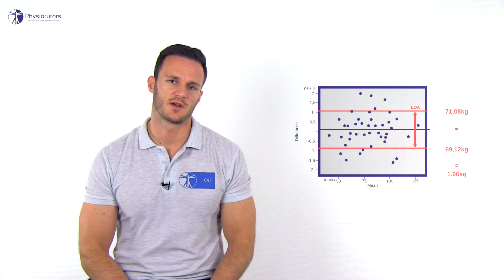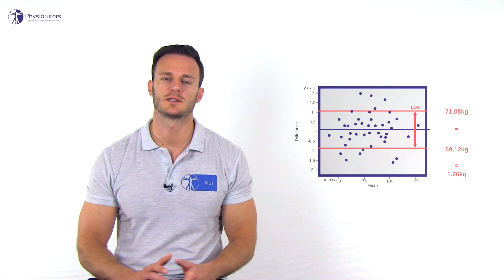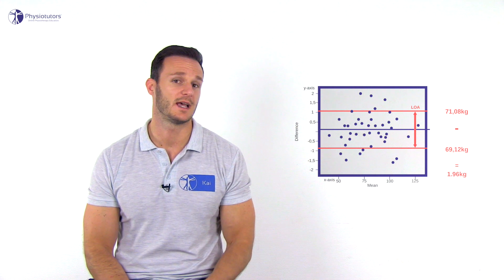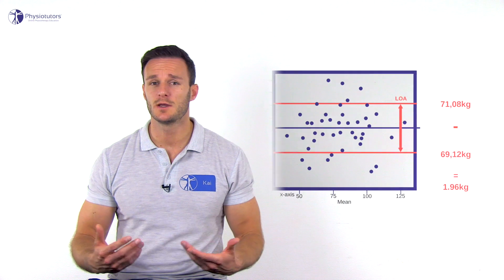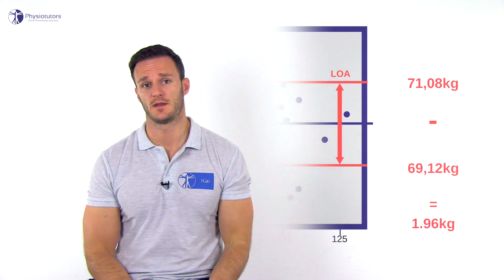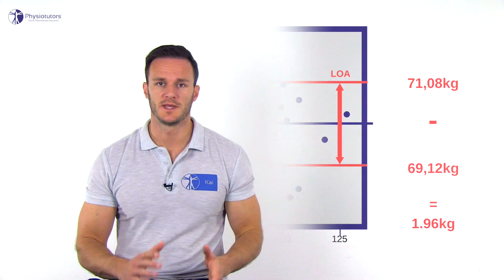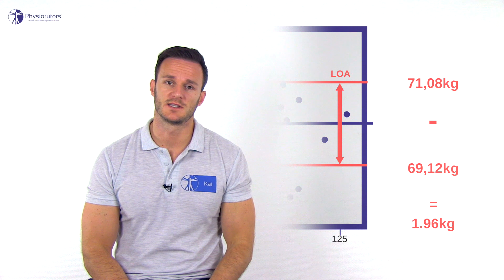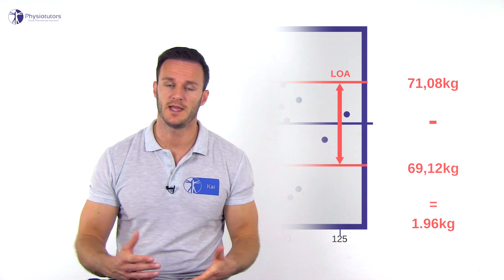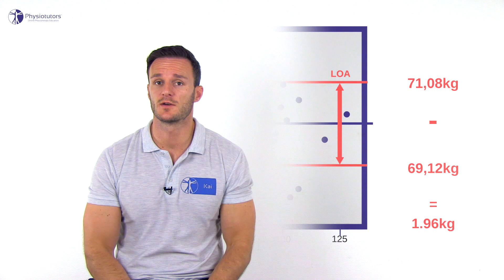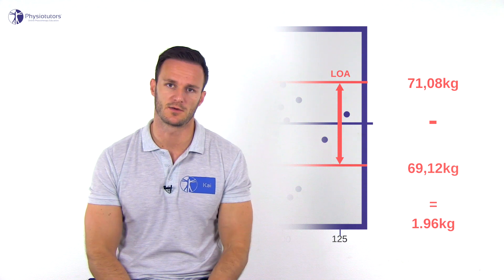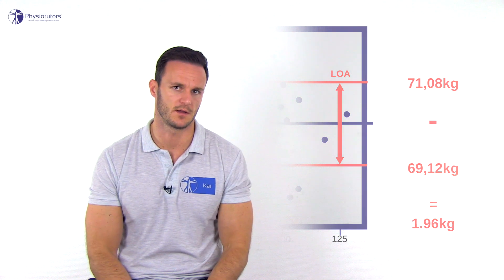Another measure of agreement is the smallest detectable change, abbreviated as SDC, which is equal to the room between the limits of agreement. So in this case the SDC of the scale would be 71.08 minus 69.12 kilograms, which is 1.96 kilograms — which is quite a lot for a scale.